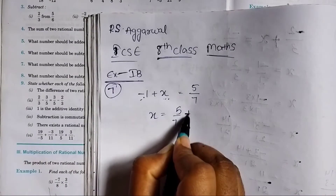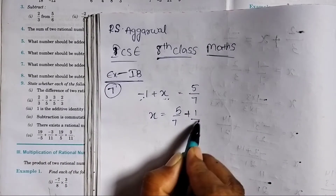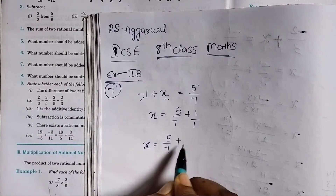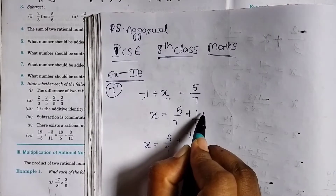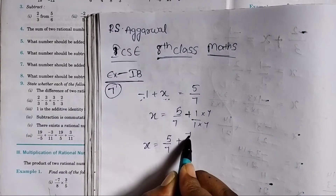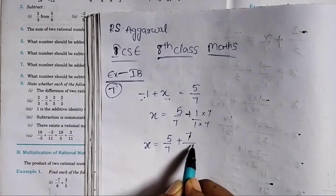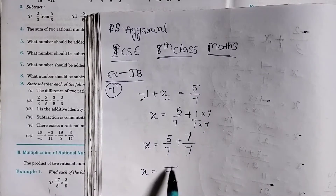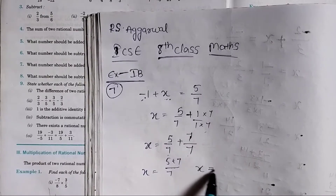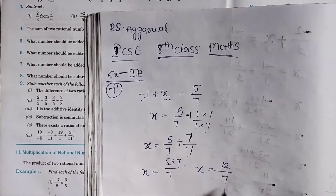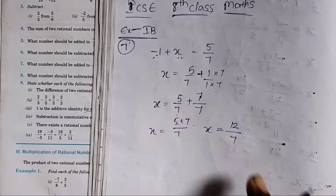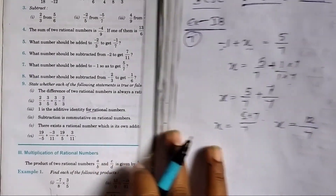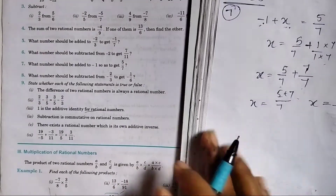Here minus 1 is inside, plus 1 is inside. The denominator is 1, but we don't have the same denominator. So to make the denominator the same, we multiply 7 in the numerator. We get 7 over 7 and 7 over 7. Now the denominator is the same. 5 plus 7 is equal to 12 by 7. This is an improper fraction, so we change it into a mixed fraction.